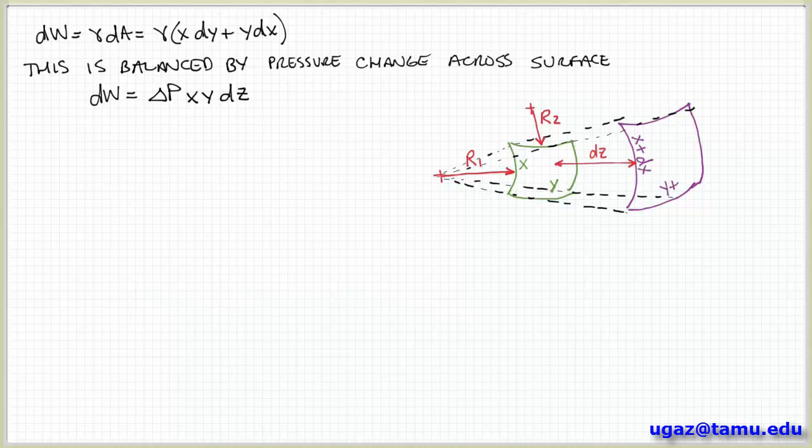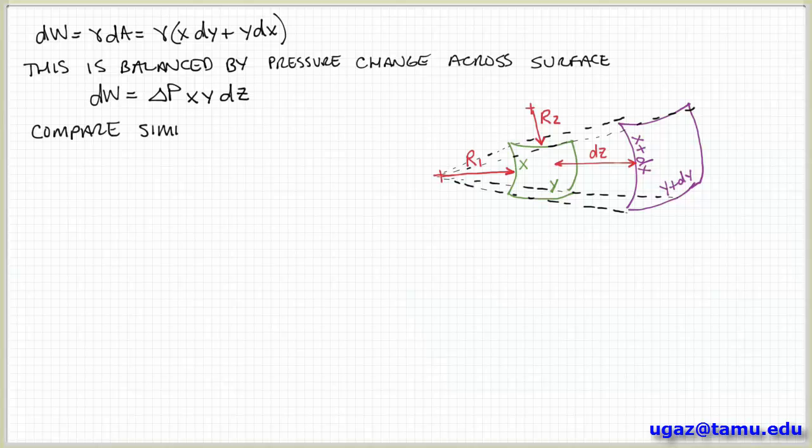Okay, so now what we want to do is try to simplify our relationship because we have dx, dy, and dz. So we'd like to try to reduce the number of variables that we have in the equation. We can do that by comparing the geometry of these initial and deformed states and noting that they're geometrically similar. Okay, so let me show you what I'm talking about here.